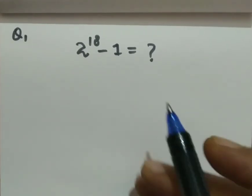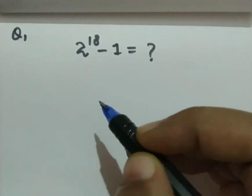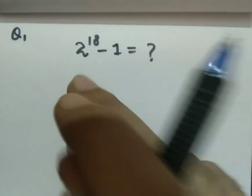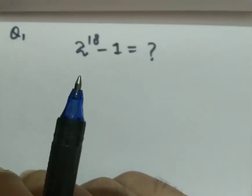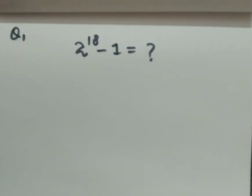Hi everyone. Today we have the question: 2 raised to the power of 18 minus 1. We need to find the value of this, which is a Norway Maths Olympiad question. So today we will solve this question.